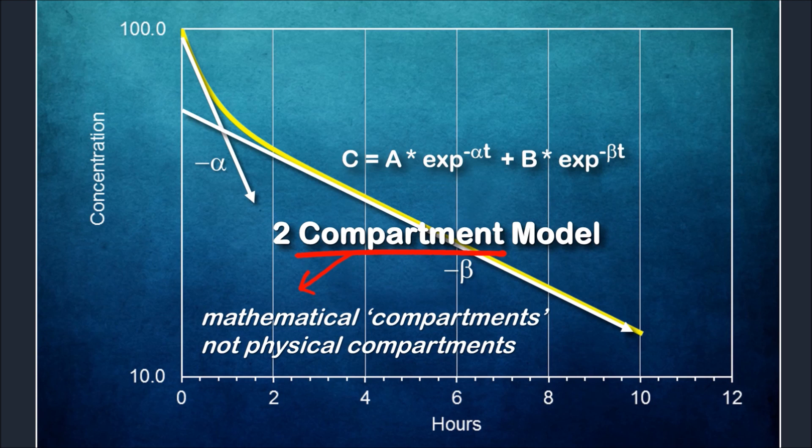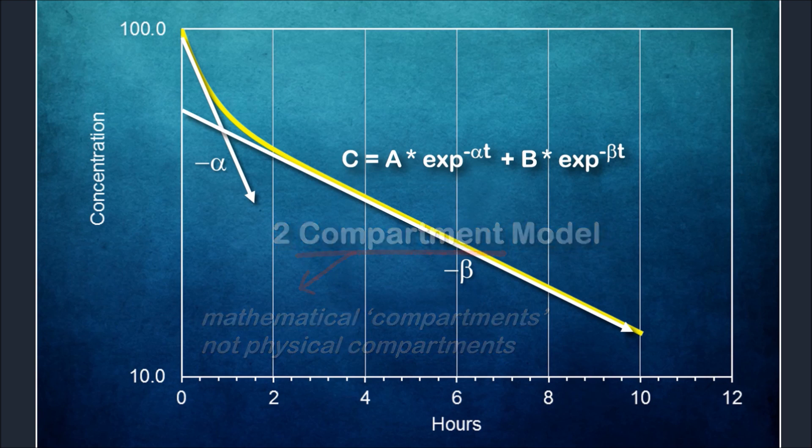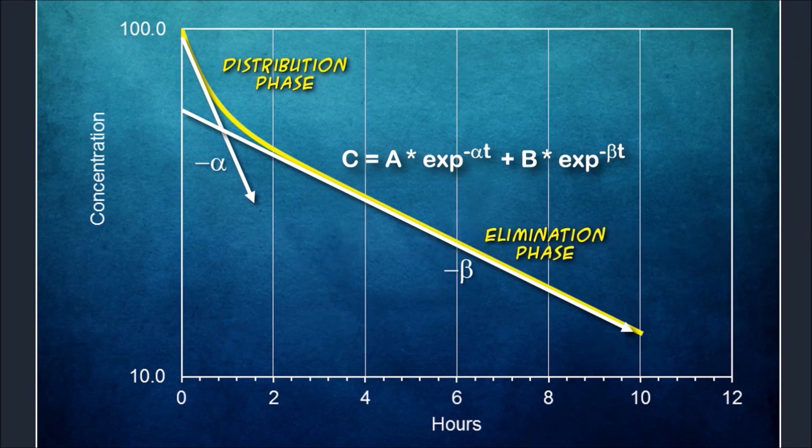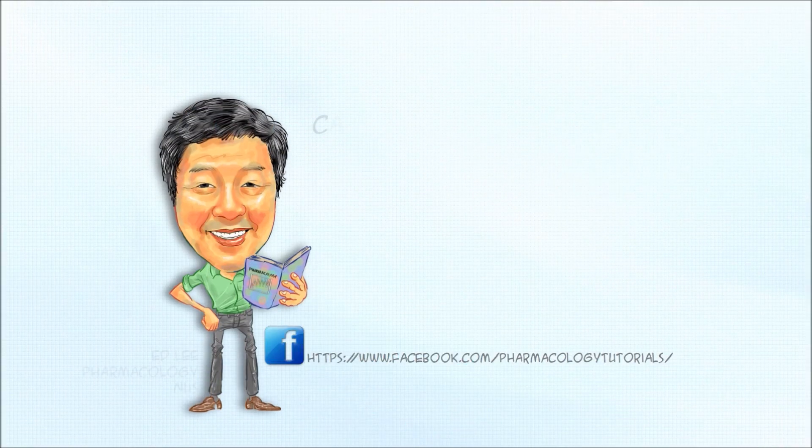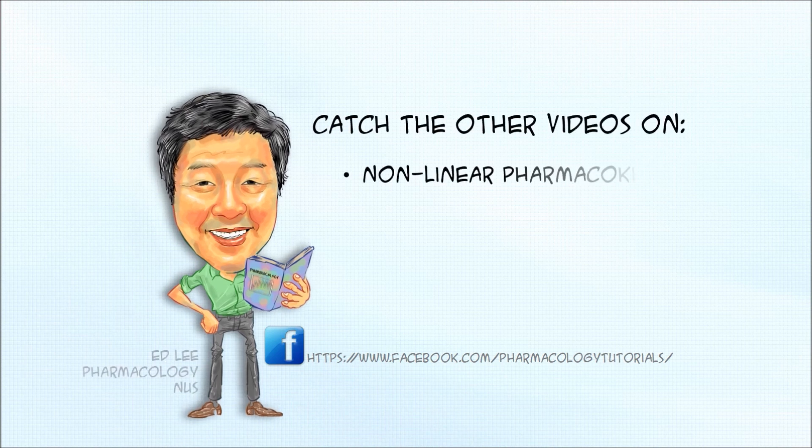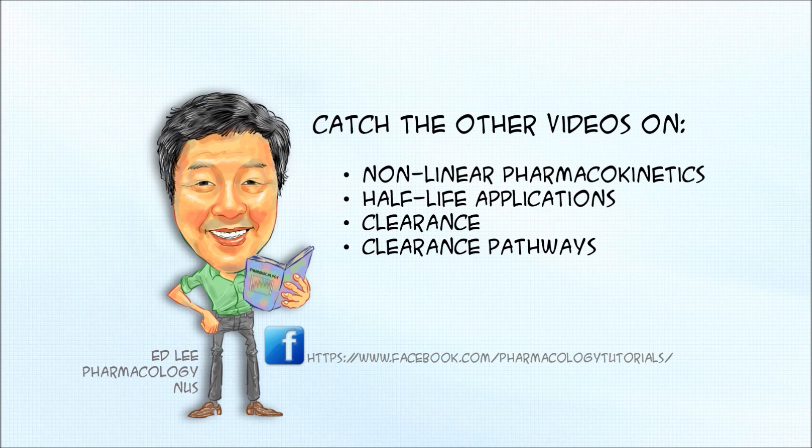In this case, the two slopes are conventionally attributed to a distribution and elimination phase. Okay, I hope this short session has been helpful to you. There's lots more to come. Do continue to follow this channel because we have more videos coming up for you. Look out for videos on non-linear kinetics, half-life and clearance mechanisms. I'll see you then.